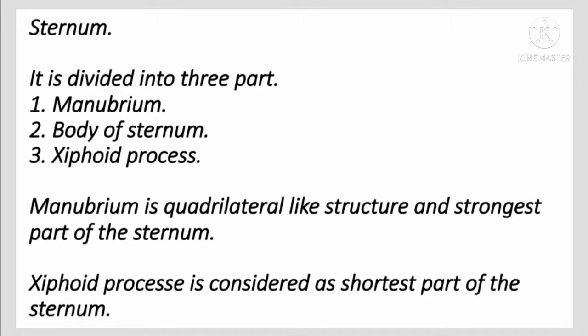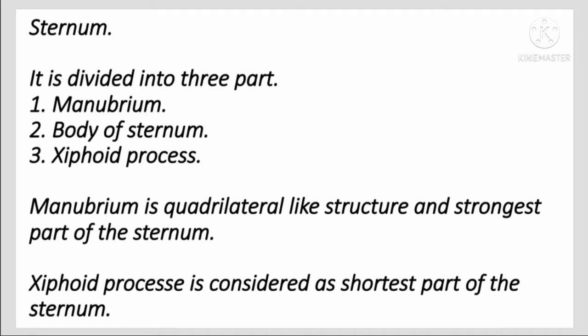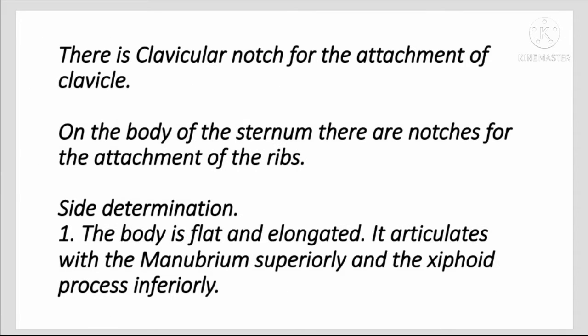The xiphoid process is considered the shortest part of the sternum. The clavicular notch is for the attachment of the clavicle. On the body of the sternum there are notches for the attachment of the ribs.